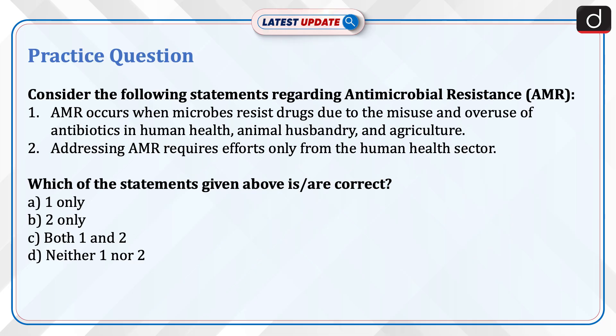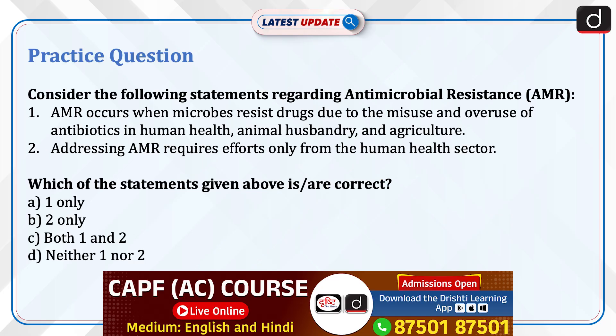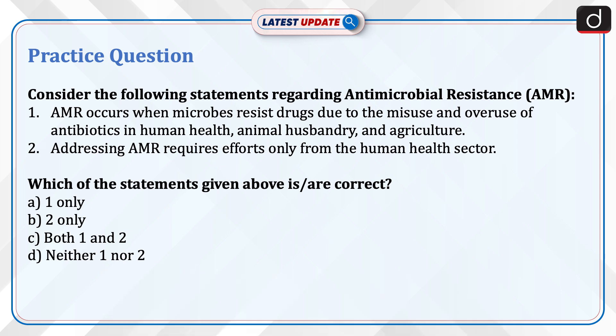Now it's time to do a practice question. Consider the following statements regarding antimicrobial resistance. Statement 1: It occurs when microbes resist drugs due to the misuse and overuse of antibiotics in human health, animal husbandry, and agriculture. Statement 2: Addressing antimicrobial resistance requires efforts only from the human health sector. Which of the statements given above is or are correct?